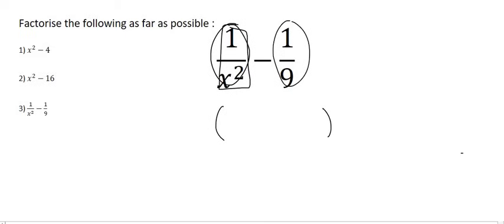And so all we do is we open up our two brackets. What times what gives us 1 over x squared? We said 1 over x and 1 over x. What times what gives us 1 over 9? We said 1 over 3 and 1 over 3. One bracket gets a plus. One bracket gets a minus. And that's how you do it.